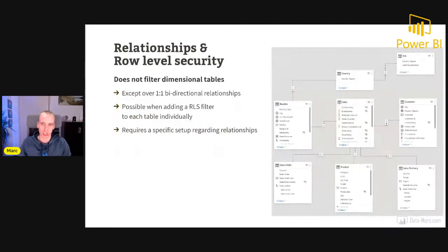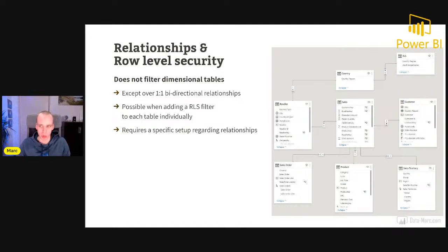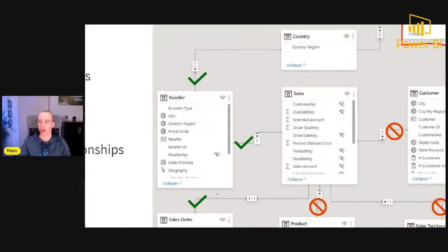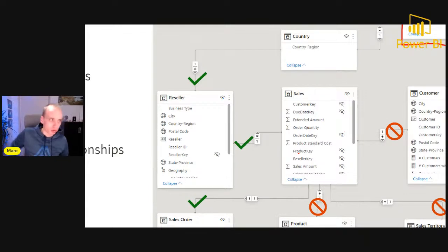Another important topic where relationship direction matters is row-level security. We typically filter from a table that filters the fact tables. The relationship direction will affect which tables get filtered based on your RLS filter. When I apply an RLS filter to the row-level security table, this relationship set to both will filter down the country, cross to the reseller table, and follow the relationship to the sales table — our actual fact table — reaching our goal of filtering values to only those the user is allowed to see.